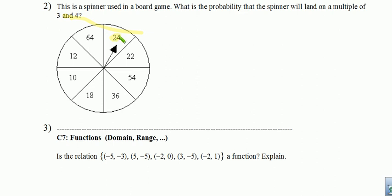So 24, definitely a multiple of three and four. 22, no. 54, not a multiple of four. 36 is a multiple of four and of three. 18, not a multiple of four. 10, not a multiple of four. 12 is a multiple of four and three. And 64 is not a multiple of three. So we just have the three numbers. So there are three ways to get a multiple of three and four. And there are eight total numbers we could land on. So our probability here is three-eighths.